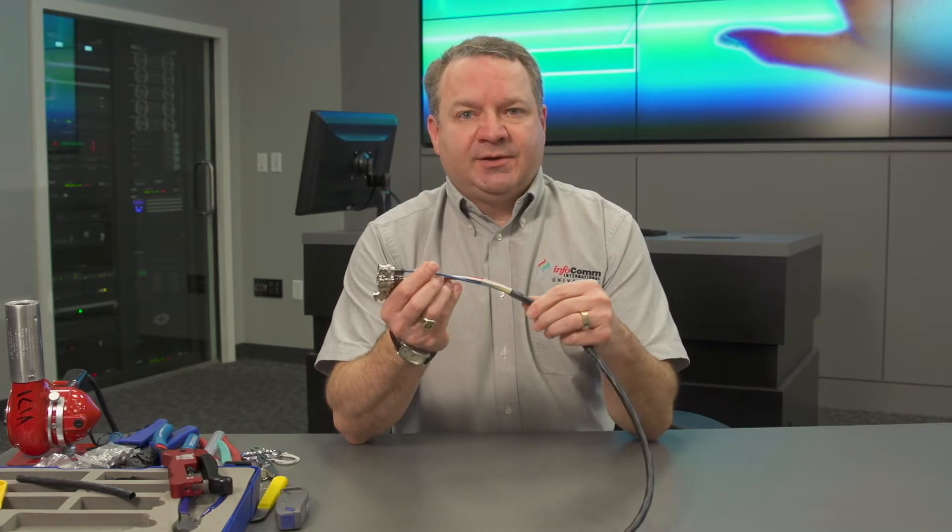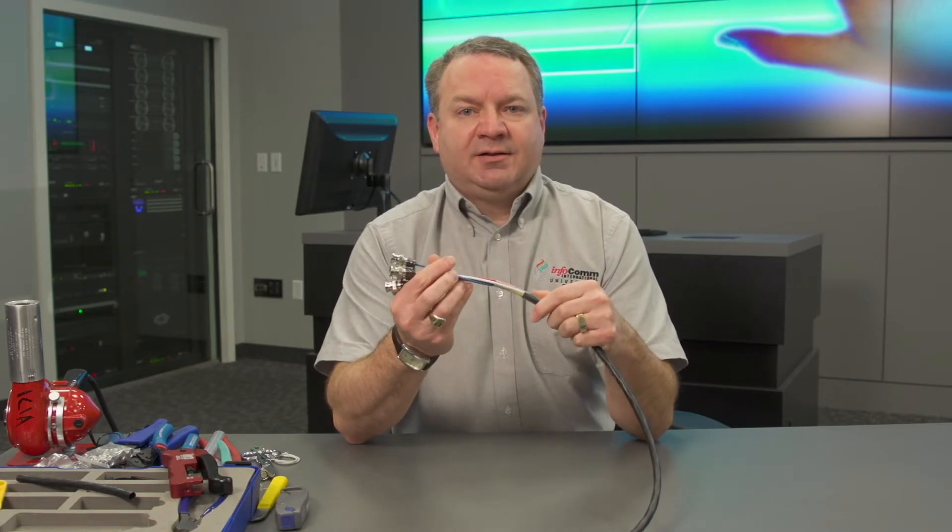Okay so now we've finished our five BNC's. We've put on our heat shrink. All we have to do is repeat this process on the other end and we're good to go.